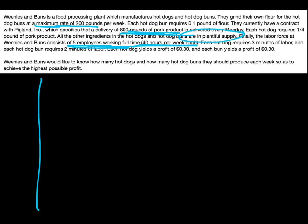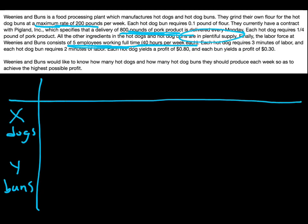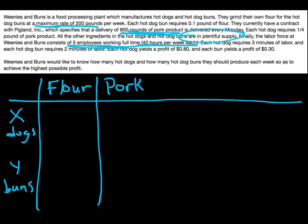I'll make a chart here. X is hot dogs and y is buns. Across the top, I'll start listing out the things we do have restrictions on — definitely flour, since only so much can be ground per week. We have pork, the pork product that's delivered, and there's not an unlimited amount being delivered. And finally we have a labor restriction — we can't just have as many employees as we want working overtime.